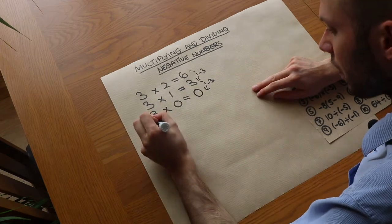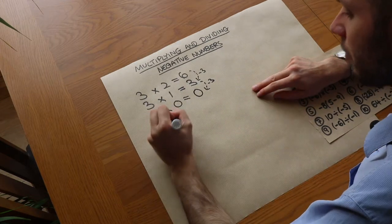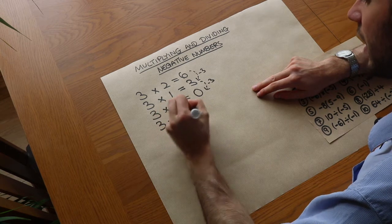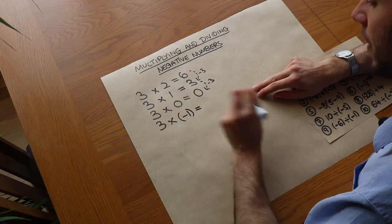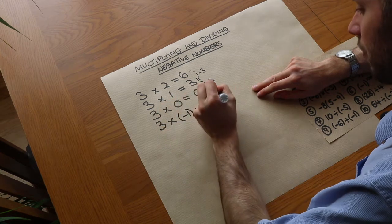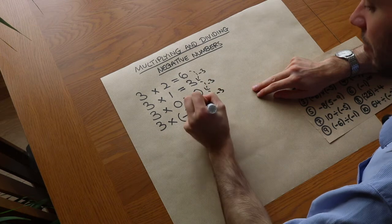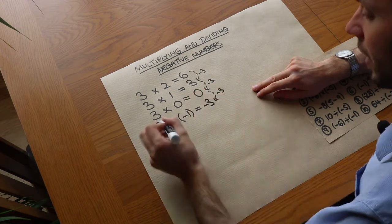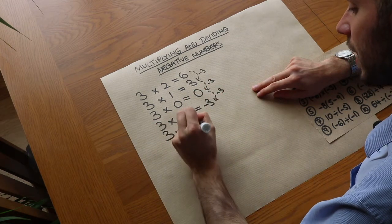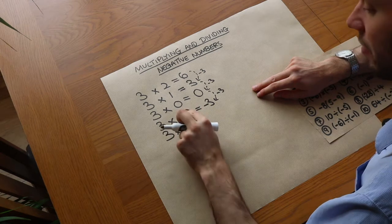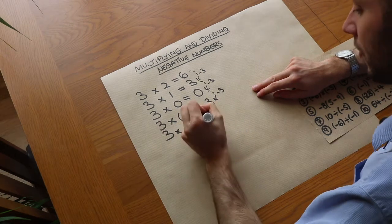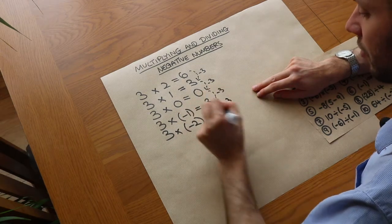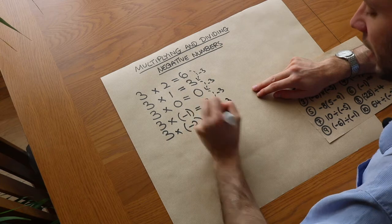But what if we keep going further? If we reduce by 1 again, 0 drops down to negative 1. By following this pattern, we can see if we subtract 3, we get to minus 3. Let's go one more — 3 times negative 2: that's dropped by 1, so it goes down by 3, giving us 1 less 3, and we have minus 6.